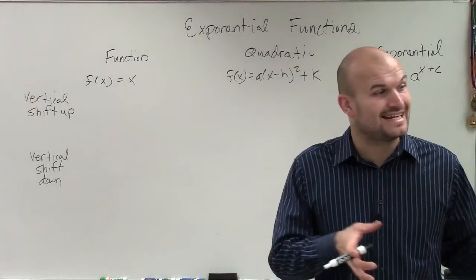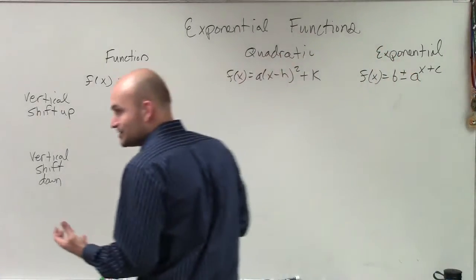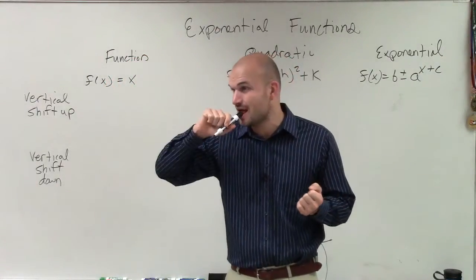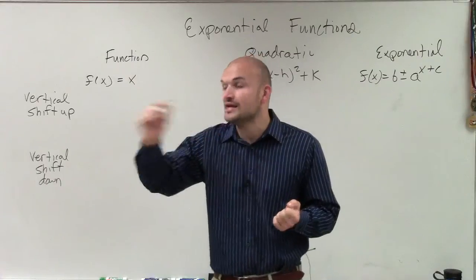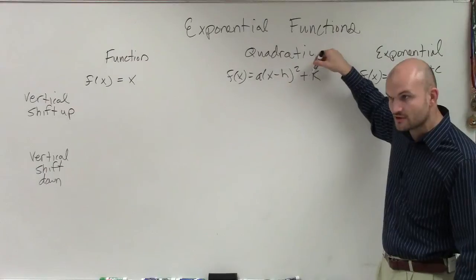Before, for horizontal, we were adding inside and outside the function. So when you have a vertical translation, we're going to be doing what? Does anybody remember? Yeah, you add or subtract k, and what's noticed about k for a quadratic is k is outside the function, right?